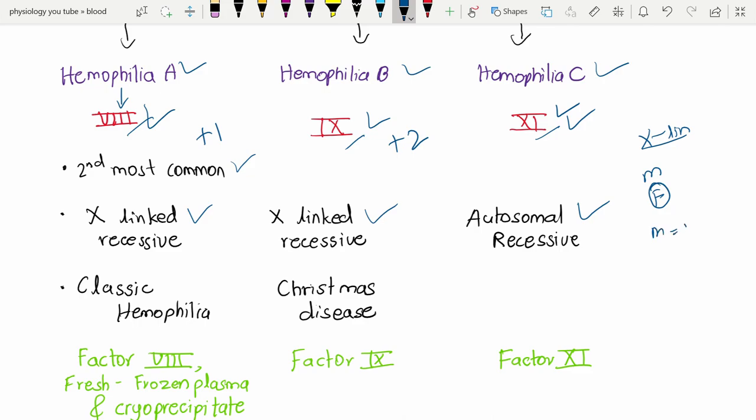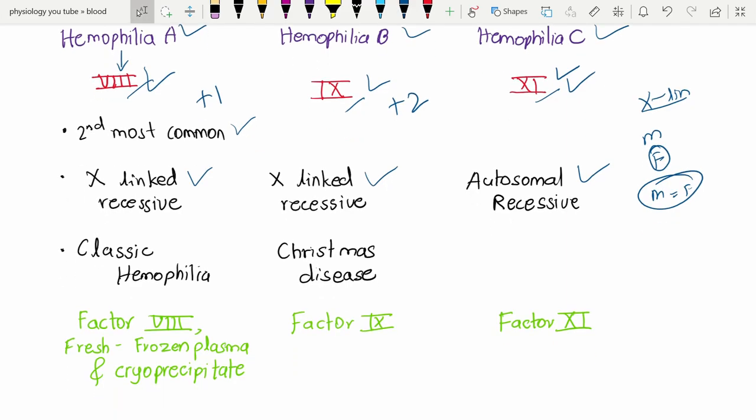Hemophilia A is also called classic hemophilia, and hemophilia B is also called Christmas disease because factor IX is also called Christmas factor. Now we'll discuss the symptoms.